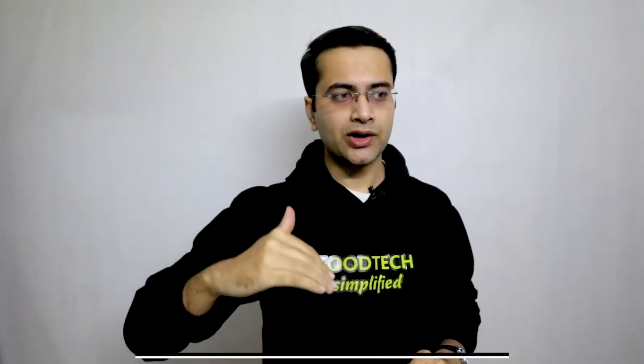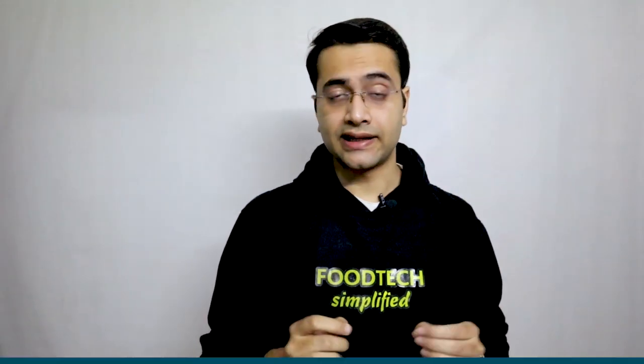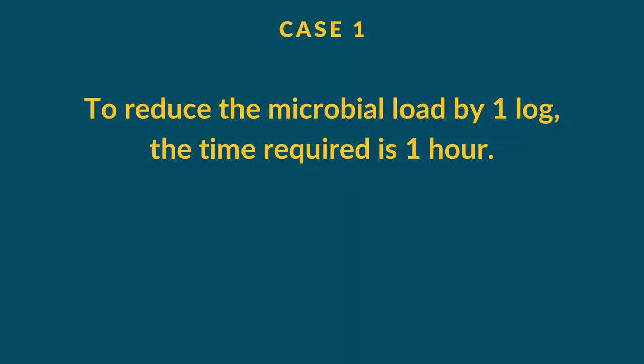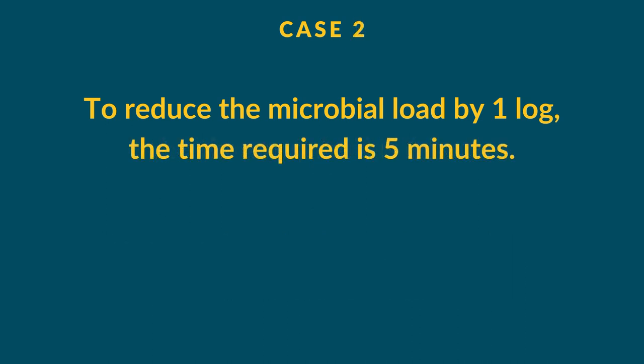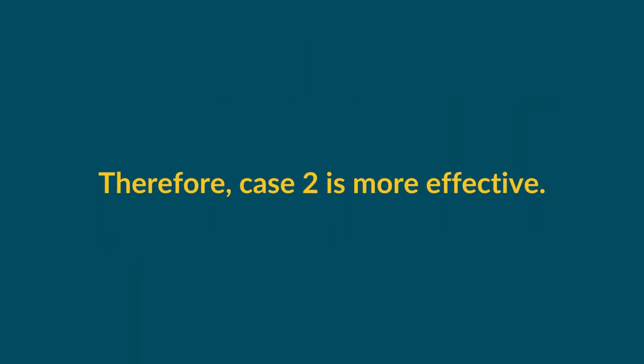Note that the temperature applied during the experiment should be constant throughout. You cannot switch between 100°C and 80°C — if you are applying 120°C, it should be 120°C throughout whenever you are measuring D-value. Another interesting point is that lesser the D-value, more effective will be the sterilization, because it indicates that bacteria are being destroyed in a very short amount of time. For example, if the time required for one log reduction is one hour, bacteria are dying slowly; but if the time required is just five minutes, bacteria are dying at a faster rate and sterilization is more effective.